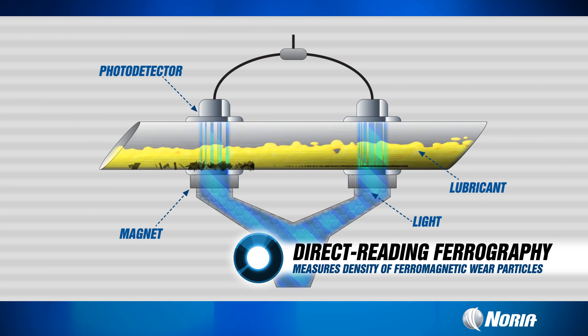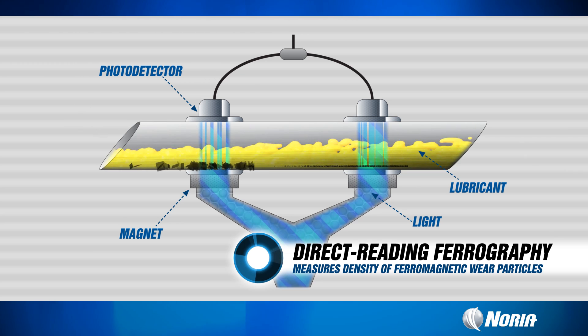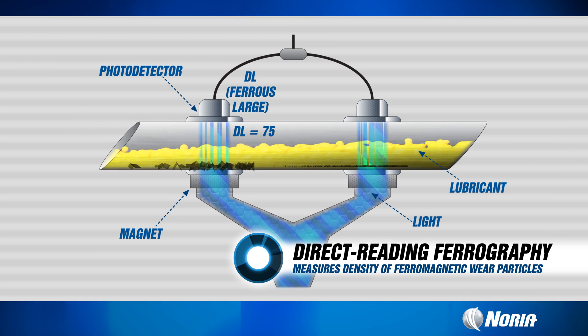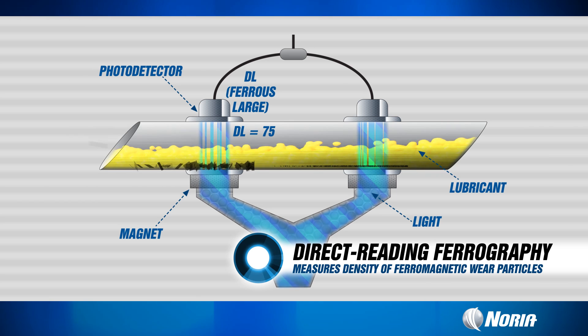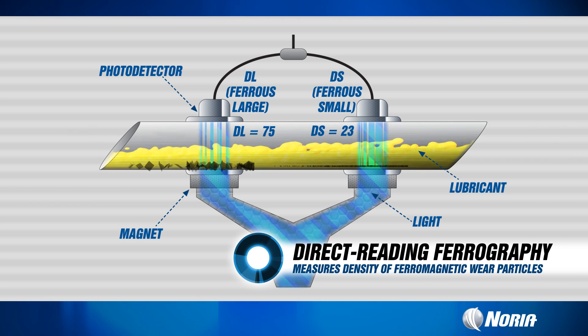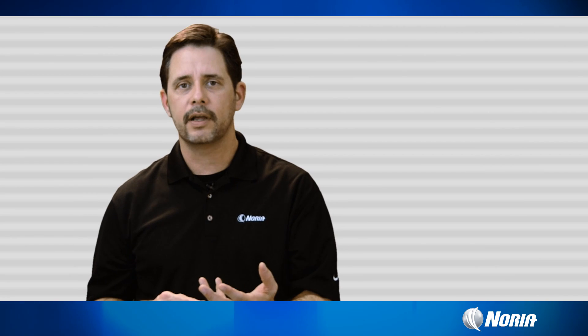Light is then transmitted through the sample, with photo detectors on the instrument measuring the amount of light passing through that sample. The results we get from direct reading ferrography are ferrous large, which are those particles greater than 5 microns in size, and ferrous small, which are those particles less than 5 microns in size.